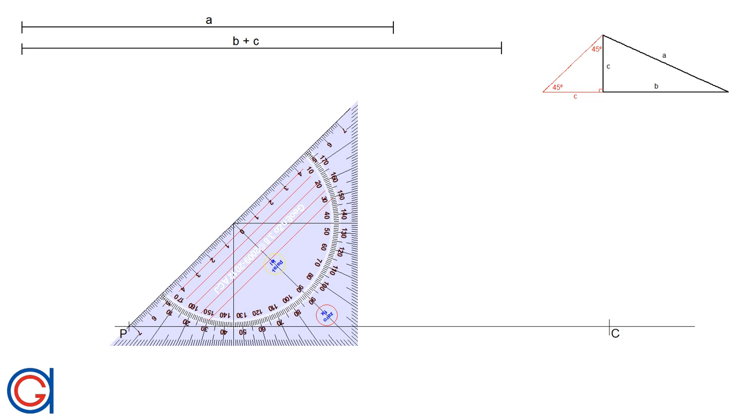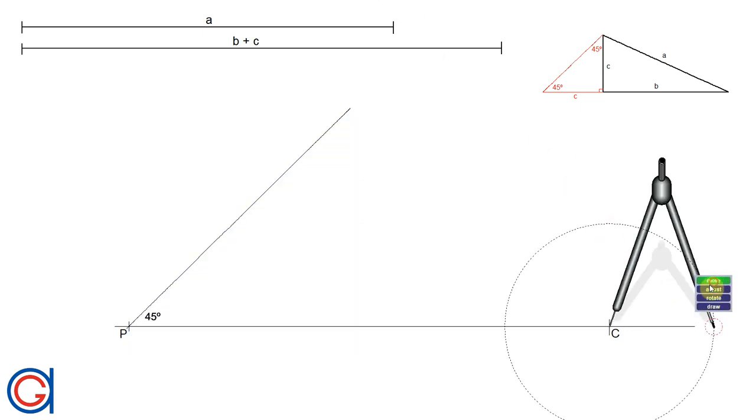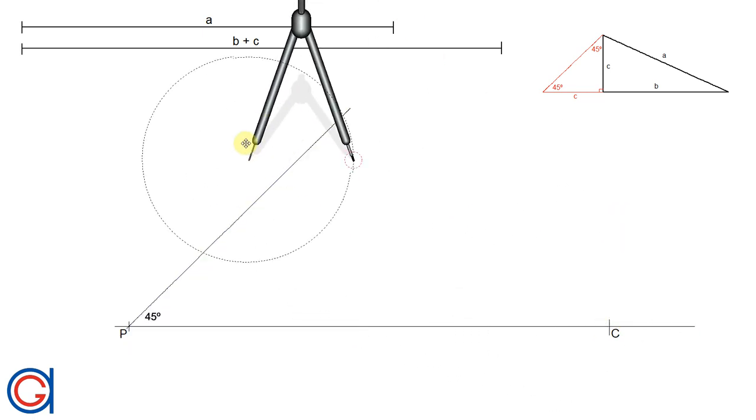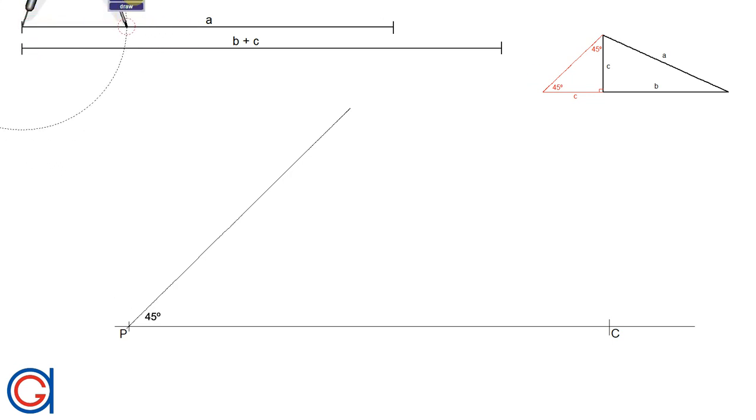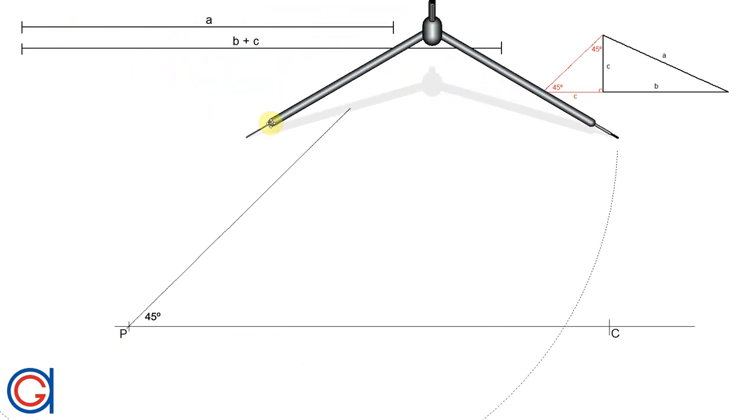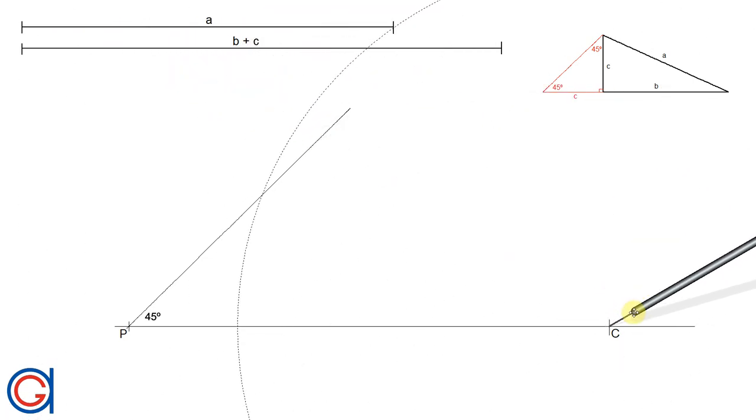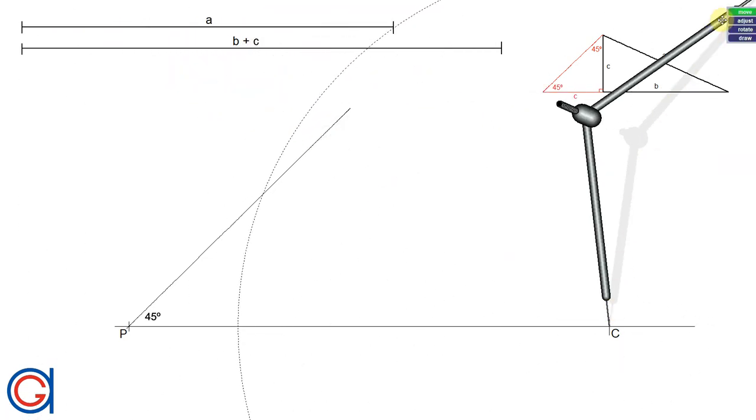And now following our reasoning from before, if we set our compass to the length of the hypotenuse, the given hypotenuse A, and set the compass on point C, we're going to scribe an arc to the left until it cuts our previously drawn 45 degree line as can be seen here.